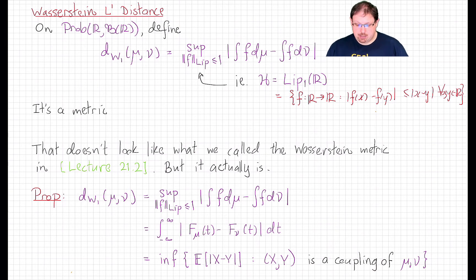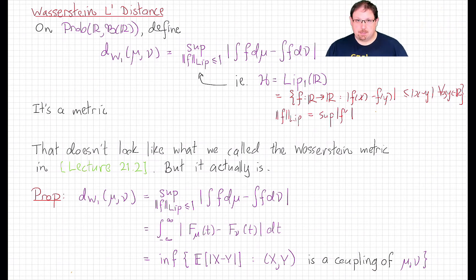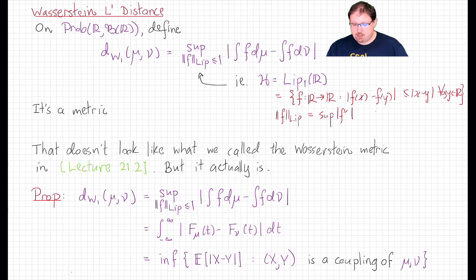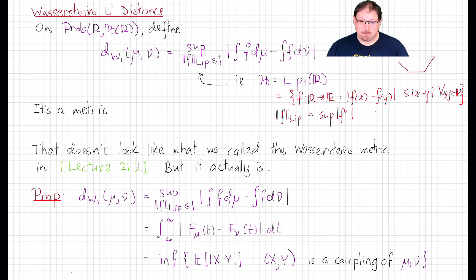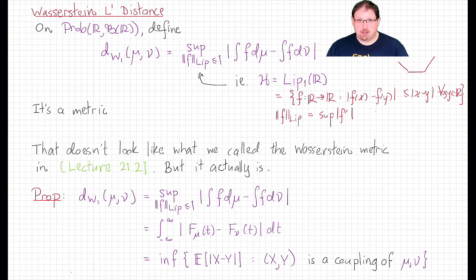Of course, differentiable functions satisfy this constraint, and if f is differentiable then the Lipschitz norm is the supremum of its derivative. Lipschitz functions are not necessarily differentiable — for example, a piecewise linear function is Lipschitz, and its Lipschitz norm will be the maximum of the absolute value of its slopes. What is true in general is that Lipschitz functions are differentiable almost everywhere, and better than that, they're what's called absolutely continuous, which is something we'll come up in the next lecture.